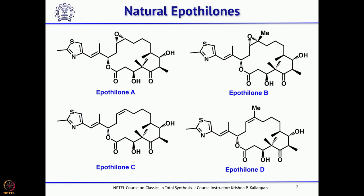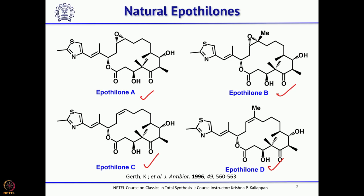There are quite a few Epothilones — Epothilone A, Epothilone B, Epothilone C, and Epothilone D. They were isolated from soil, which is an unusual source, and they were found to show exceptional anti-cancer activities. Some analogs were also made while synthetic chemists were trying to make these natural products. One of the analogs now introduced as a drug is Ixabepilone.